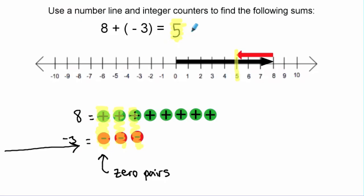So just to recap, two different methods — you will be expected to be able to use both of them. One using a number line, and the second method using integer counters. These are two different ways that we can find the sum of different integers.